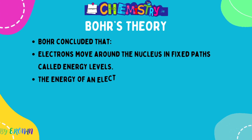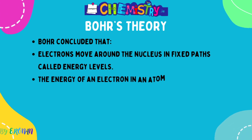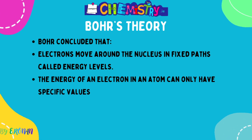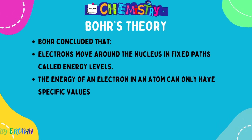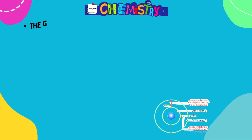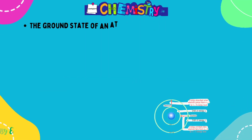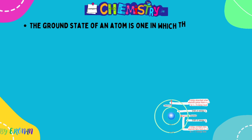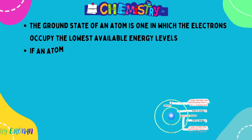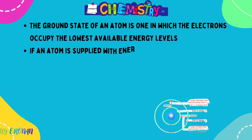Bohr concluded that electrons move around the nucleus in fixed paths called energy levels — which we now know to be untrue. The energy of an electron in an atom can only have specific, unique, discrete values. That electrons don't move in fixed paths was a limitation of his theory.